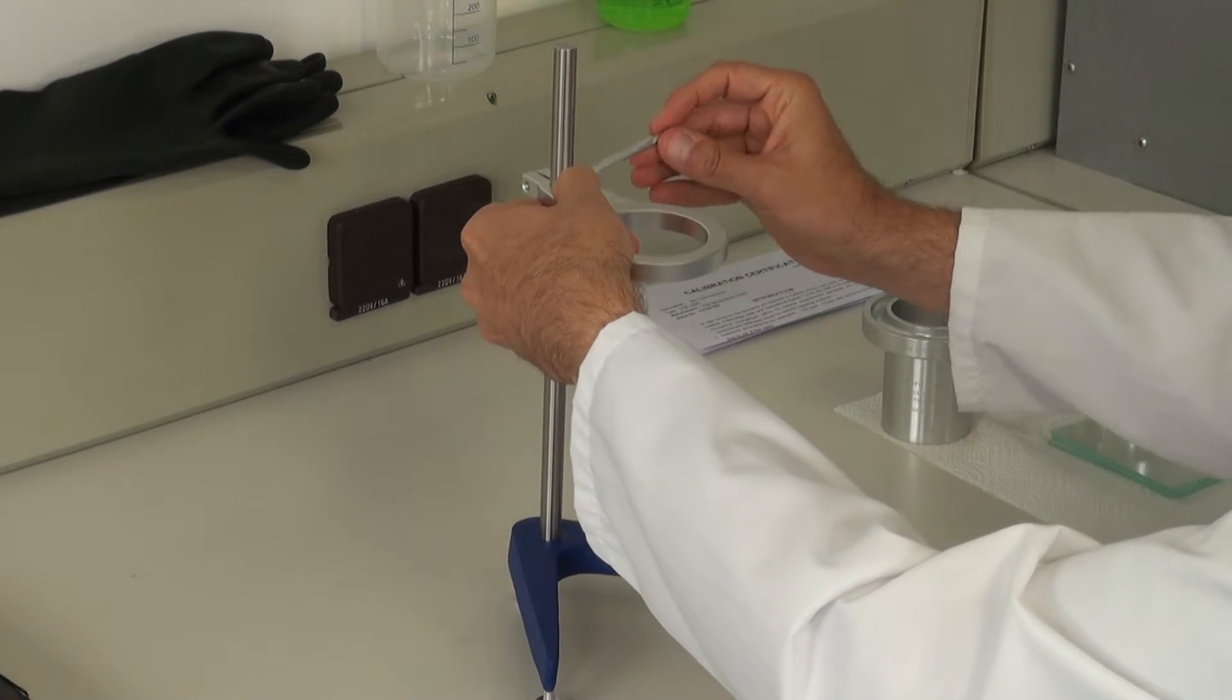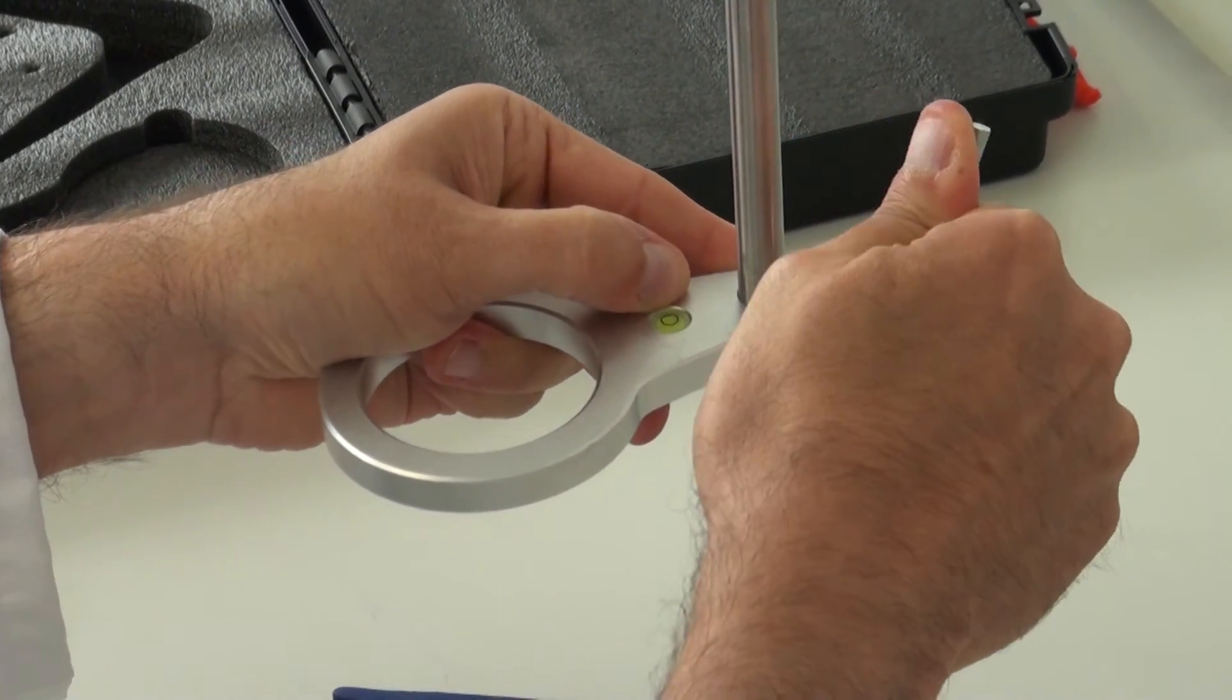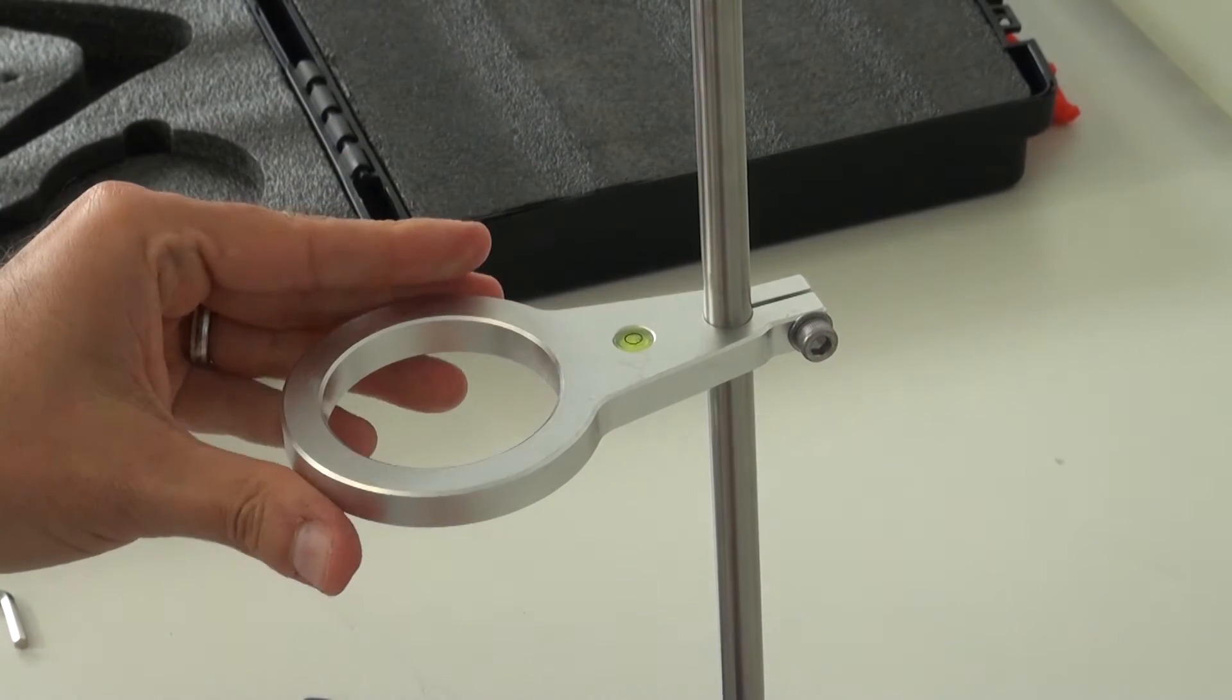Now we place the cup holder and fix it at the right height and tighten it using the allen key.